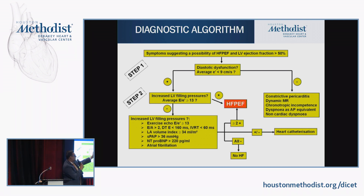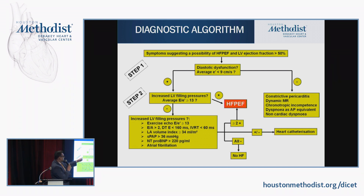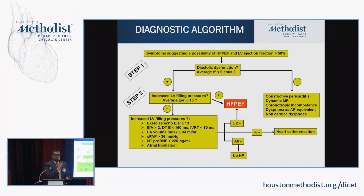If your E-prime — medial or lateral — is less than 8 cm/s, that is considered abnormal and you go down this pathway. If you have echo evidence of elevated left ventricular filling pressures, such as an E/E-prime ratio greater than 13, you do have HFpEF. If you don't meet that criterion, look for other markers of elevated LV filling pressures like elevated BNP or left atrial enlargement. If you have two of those, you can diagnose heart failure with preserved ejection fraction.